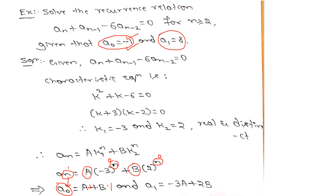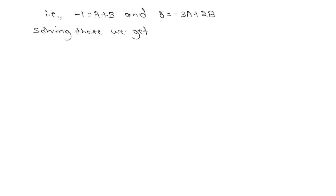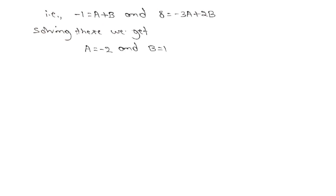Similarly, putting n equals 1 everywhere, we get A1 equals A·(minus 3) to the power 1 plus B·2 to the power 1, which gives A1 equals minus 3A plus 2B. Substituting the value of A1, we get equation 2. Solving these two equations simultaneously, we find that capital A equals minus 2 and capital B equals 1.